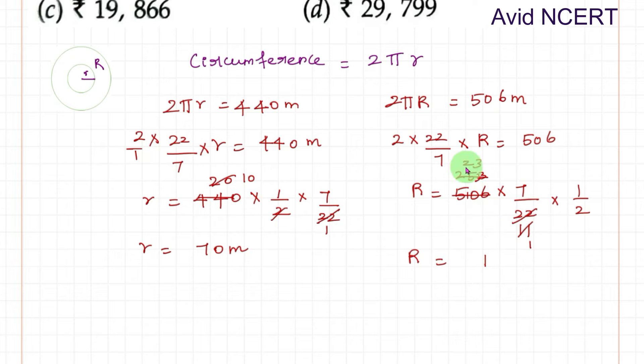7 times 3 is 21, 7 times 2 is 14, 15 is 16, so 161 by 2. We can keep this as it is or convert it into decimal. 2 times 8 is 16, 2 times 0 is 0, and 2 times 5 is 10, so 80.5 meters.